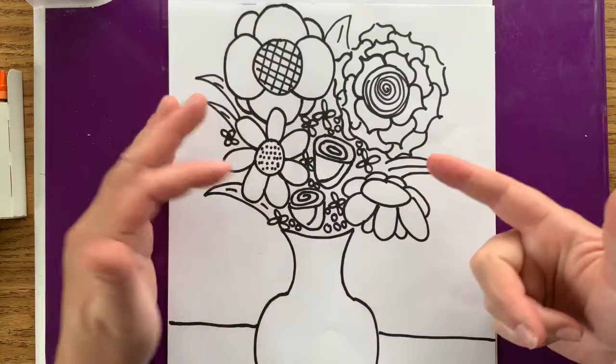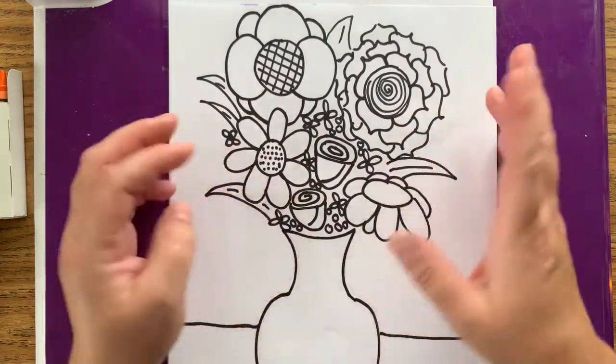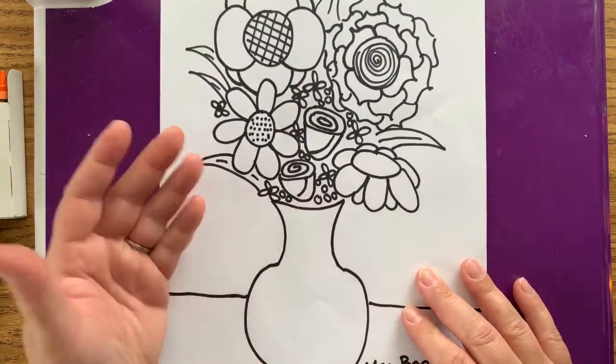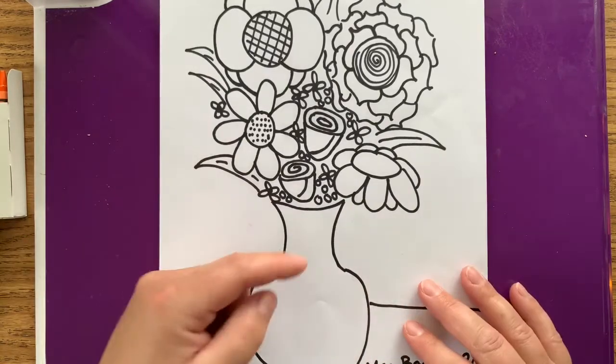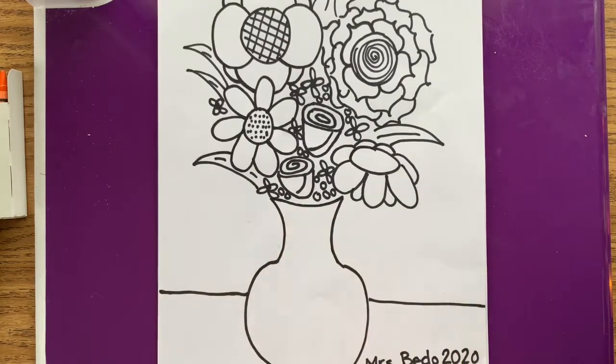Now, I don't even need to add the stems because really when you look at a bouquet of flowers, you don't really see the stems. You see the leaves. You see the flowers. If you want your vase to be clear like the vase that I have, you could draw some of your stems down into there. But I'm going to actually color my vases.